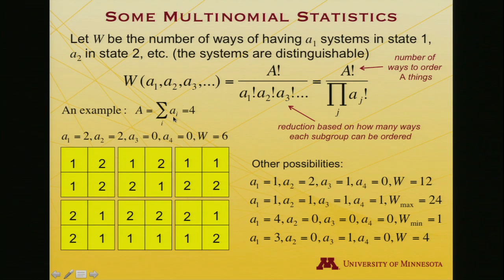And if you think of some of the other possibilities, a trivial one is how many ways are there to have all four states the same? Well, that's four factorial over four factorial. That is the minimum possible value for W, it's one. And if you think about what's likely to be the maximum possible value, it's where every state is unique.